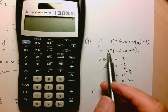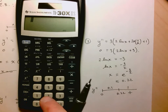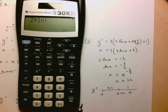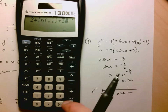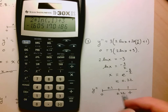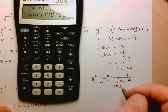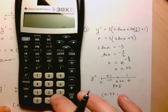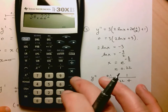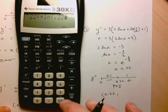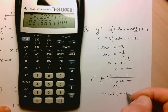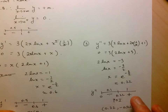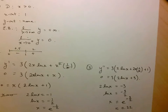The y-value at the inflection point: 3 × (0.22)² × ln(0.22) ≈ -0.22. Now we have all the information needed to graph the function: an x-intercept at 1, a local minimum, and a point of inflection.